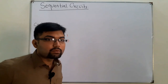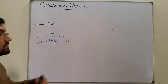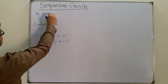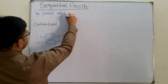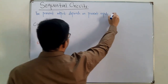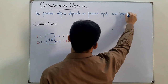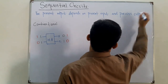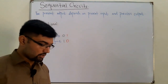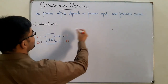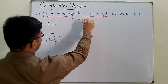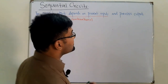From today we begin with something new called sequential circuits. In sequential circuits, the present output depends on two things: the present input and the previous output. Up to just present input, we have a combinational circuit. The addition of the previous output dependency is what is new here.